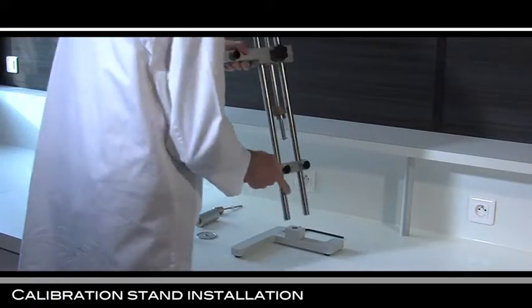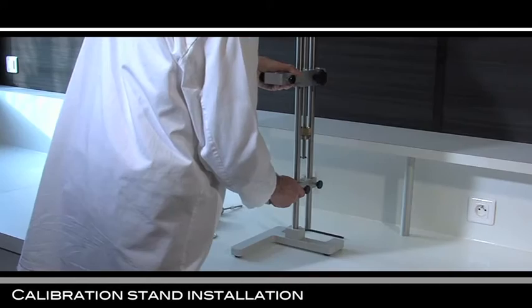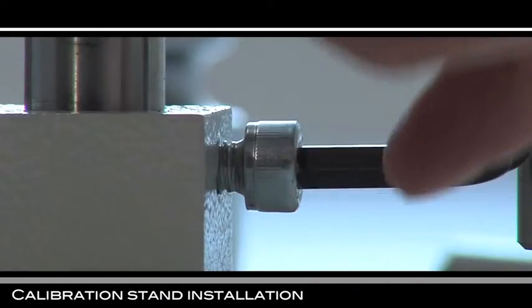Put the base of the low arm of the calibration stand on a level table. Install the system on the base. Block with the screw.